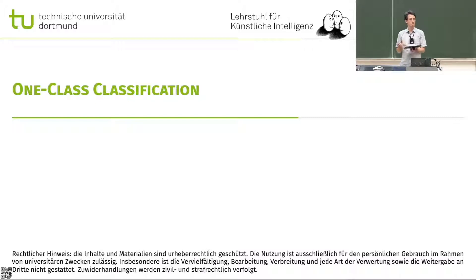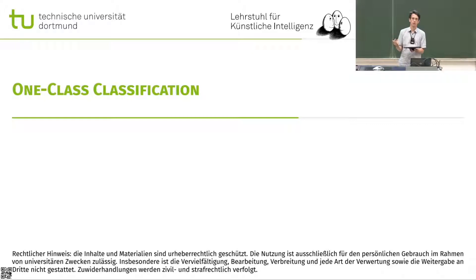One-class classification. I mentioned already that we can do a variant of outlier detection where we assume the data is clean, and we are looking at new objects, whether they fit to what we have or they don't fit. And that's when we have the one-class classification scenario.